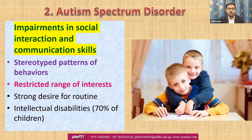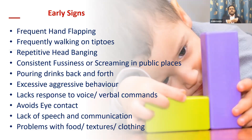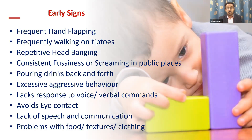Intellectual disabilities are very common in almost 70% of these children. These are some indications of the disorder: frequent hand flapping, frequently walking on tiptoes, repetitive head banging — sometimes on a wall or the floor. Consistent fussiness or screaming in public places even for silly things, making noise and sounds. Pouring drinks back and forth is one of the common signs found in autistic syndrome.